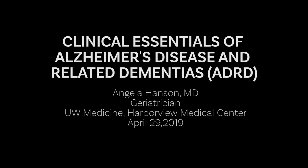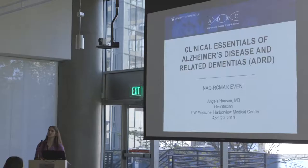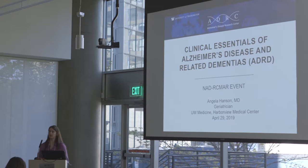I'm Angela Hansen. I'm assistant professor at the University of Washington. I'm a geriatrician, so I specialize in care for older adults. I got interested in Alzheimer's research as a fellow, and so I do clinical care as well as research for Alzheimer's disease.